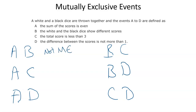What about A and C? The sum of the scores is even, and the total score is less than three. This is also possible, because the total score could be one plus one equals two. Two is less than three, and assuming standard six-sided dice, two is even. So again, these are not mutually exclusive.